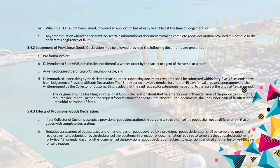5.4.2 Lodgement of Provisional Goods Declaration may be allowed provided the following documents are presented: a. Pro Forma Invoice; b. Duly Endorsed BL or AWB, or in the absence thereof, a written order by the carrier or agent of the vessel or aircraft; c. Advanced Copies of Certificate of Origin, if applicable; and d. Duly Notarized Undertaking by the declarant that the other supporting documents required shall be submitted within 45 calendar days from lodgement of Provisional Goods Declaration. The 45-day period may be extended for another 45 days for valid reasons upon approval of the written request by the Collector of Customs, provided that the said request for extension is made prior to the lapse of the original 45-day period. The original grounds for filing a provisional goods declaration should be the same reasons for the extension of the period to submit the required document. Further, the request for extension of period to submit the required documents shall be under pain of falsification for untruthful narration of facts.